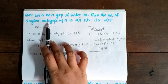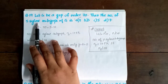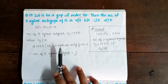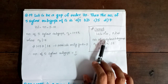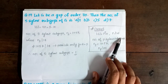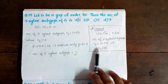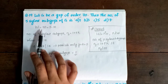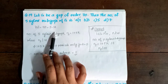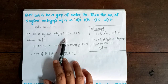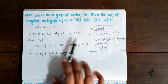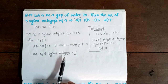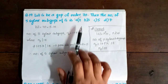Next, question 19: Let G be a group of order 70. Then the number of 5-Sylow subgroups of G is? The order of G equals p raised to n times m, where p does not divide m. The number of p-Sylow subgroups N_p equals 1 plus 5k such that N_p divides m. Here 70 equals 5 times 14, so N5 equals 1 plus 5k, and 1 plus 5k must divide 14. This is possible only for k equal to 0. Therefore number of 5-Sylow subgroups equals 1. So option A is correct.